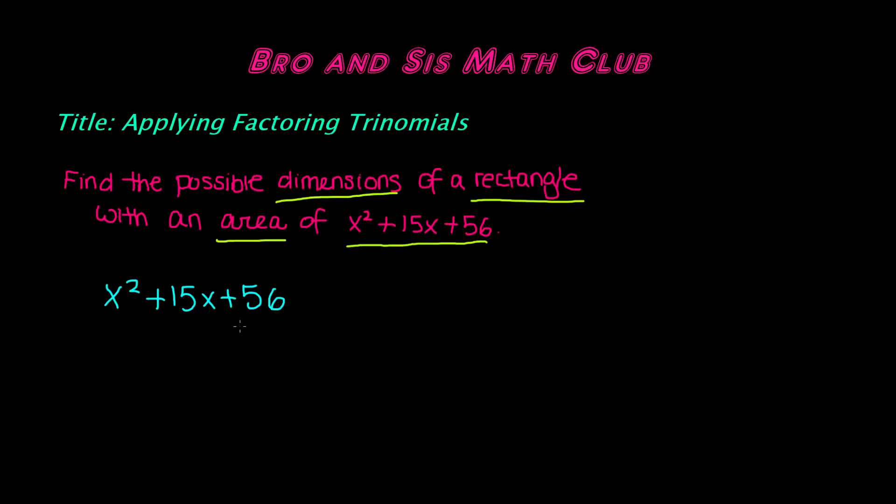So the c term in this case is 56, and the value of b is 15. So we need to find factor pairs of 56 that when we multiply, we'll get 56, and when we add, we get positive 15.